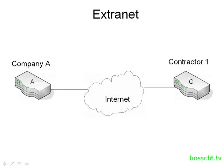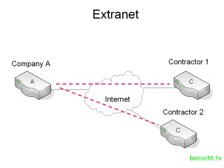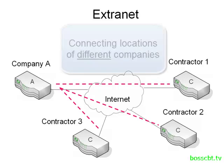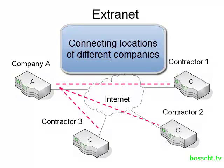The second scenario is what you would call an extranet. Instead of connecting locations of the same company, with an extranet we're going to create a VPN between two different companies. For example, if company A hired a contractor to provide some maintenance to their databases and that contractor needs secured remote access, we would create a VPN for that contractor — and we would refer to this as an extranet. If we had many contractors, we could create an extranet VPN for each one.